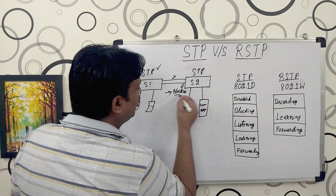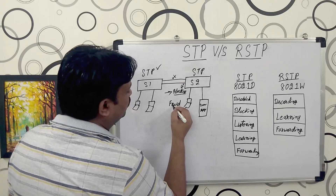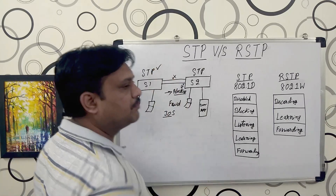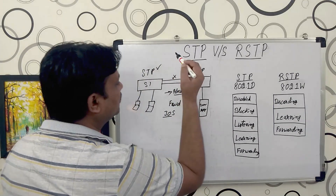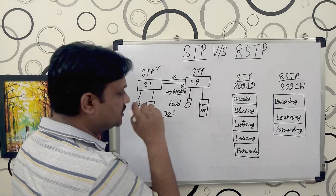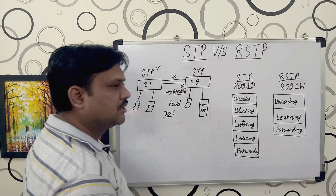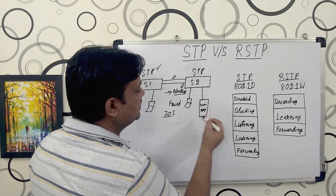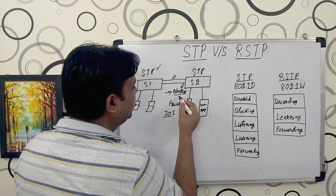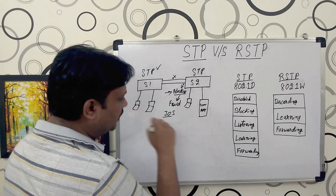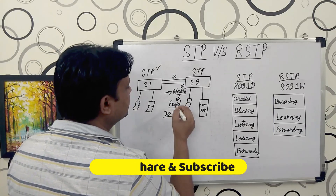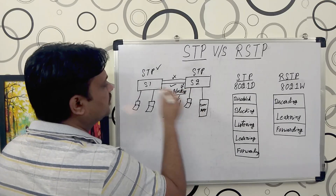The time between blocking and forwarding is 30 seconds in STP protocol. This means if the upper link goes down, users connected to Switch Number One will experience a network outage for 30 seconds — they will not be able to access the server application. But after 30 seconds, STP will automatically move the blocked port into forwarding stage and data will start transferring through the lower link.